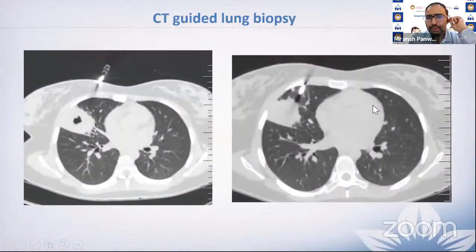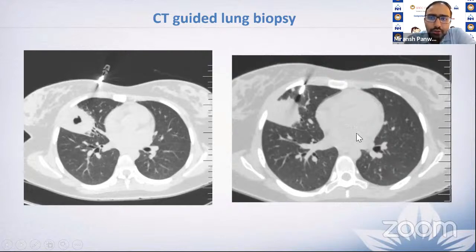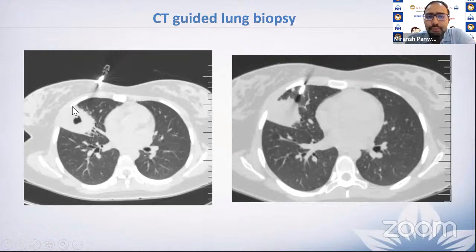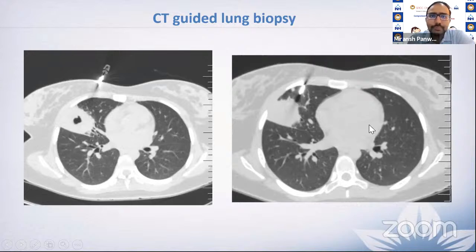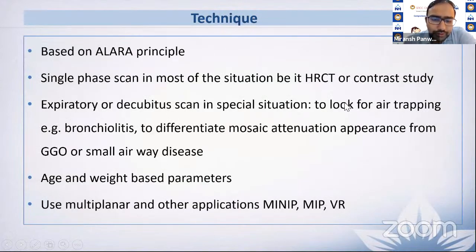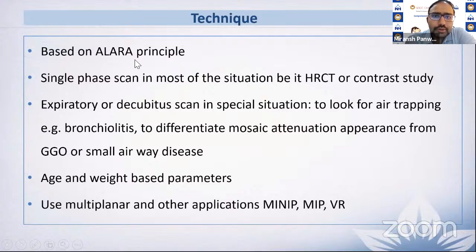CT can also be used for CT-guided lung biopsy — for example, a cavitary lesion in the right middle lobe where a CT-guided needle safely accesses the mass. Regarding technique: in pediatric populations, who are more prone to radiation injury and have a long life ahead, always follow the ALARA principle — as low radiation as reasonably achievable. Do only single-phase scans.